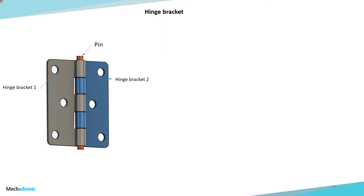Let's have a look at this case study of the hinge bracket assembly. These kinds of hinges, which have two brackets with a pin assembled into them, are very common in household applications like doors, shutters, etc. So let's understand how we would design these parts for mass manufacturing and set up a GD&T tolerancing scheme for the function.